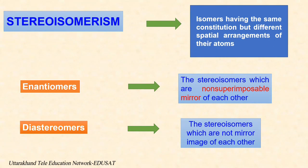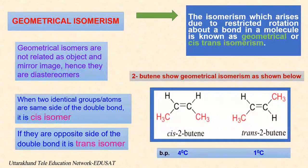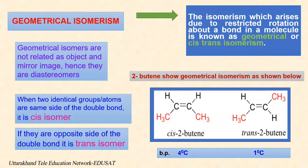Diastereomers still have the same physical properties. Geometrical isomerism arises when atoms or groups are arranged differently in space due to restricted rotation of a bond in a molecule. In alkenes, the carbon atoms of the carbon-carbon double bond are sp2 hybridized. The C=C double bond consists of a sigma bond and a pi bond. The sigma bond is formed by the overlap of sp2 hybrid orbitals. The pi bond locks the molecule in one position. The two carbons of the C=C bond and the four atoms attached to them lie in one plane, and their positions in space are fixed. This restriction of rotation about the carbon-carbon double bond is responsible for geometrical isomerism in alkenes.